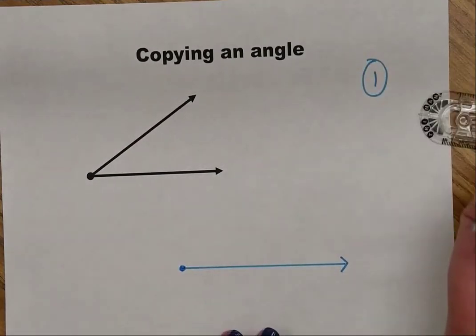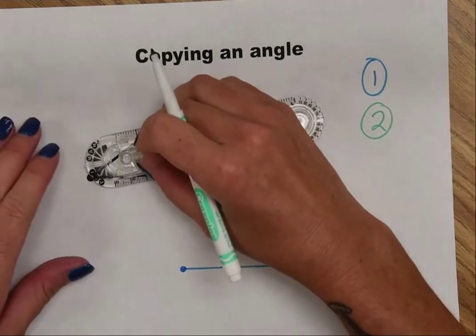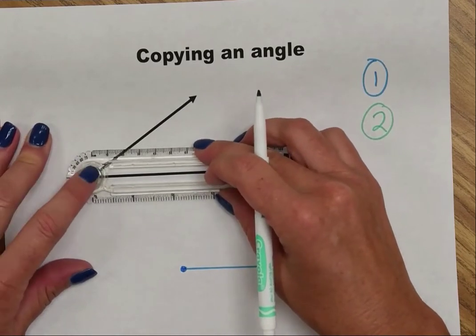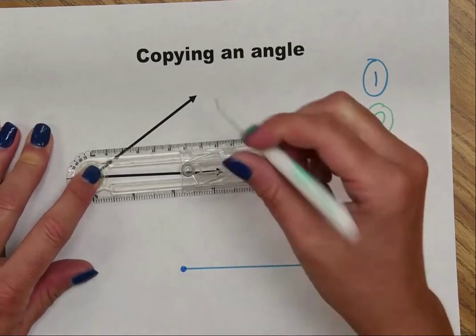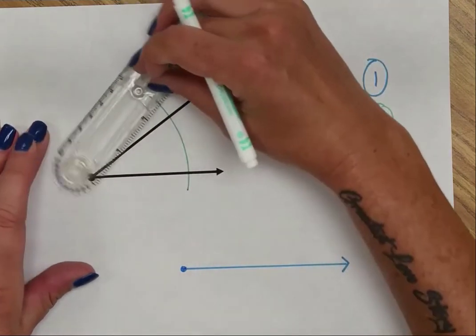Step two, I'm going to make an intersecting arc or a reference arc on my original angle. I put the bullseye on the vertex and I want to make sure the hole is somewhere that will intersect both rays when I swing it.